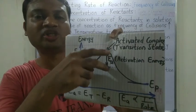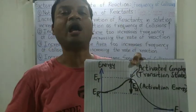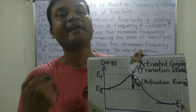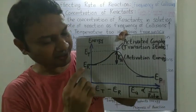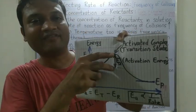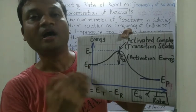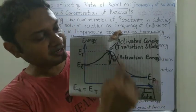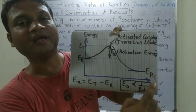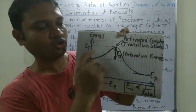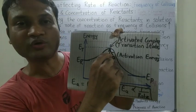Higher the activation energy, more time the reaction will take. The more the activation energy, the more energy we need to supply, and more time it takes to go from reactants to products. If we somehow reduce the activation energy, reactants will convert to products faster. More the activation energy, slower will be the reaction; less the activation energy, faster will be the reaction. Think of it like travelling from point A to point B — if there is a big mountain in between, it takes more energy and more time to cross it.